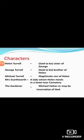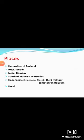Mrs. Scarsworth is a lady whom Helen meets in a hotel near a cemetery. The Gardener is the character who appears only at the end of the story. He may be Michael's father, or perhaps an incarnation of God — and we shall discuss this after telling the story.